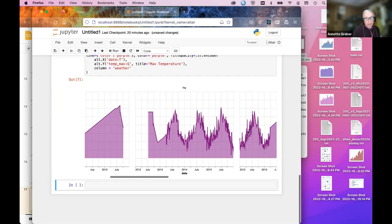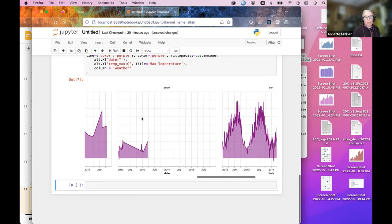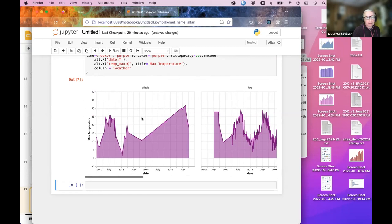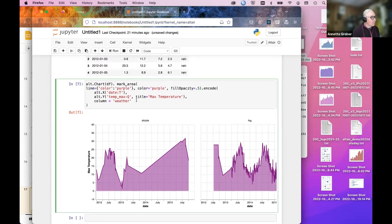So all of a sudden, boom, I have all these different charts. So it's faceting on the weather, snow, sun, rain, etc. That's pretty cool.